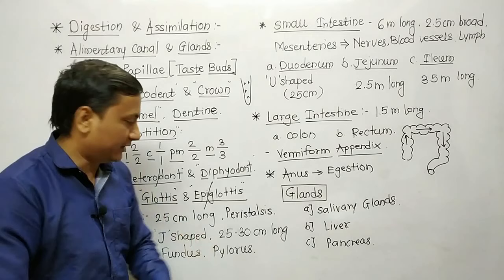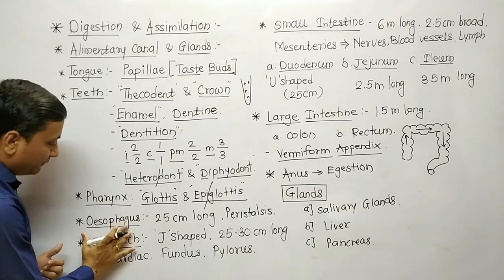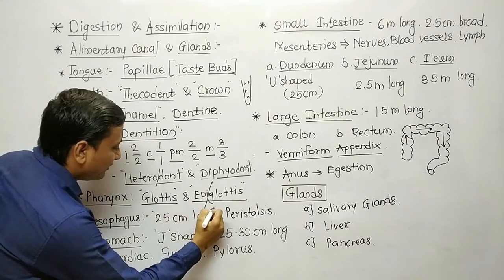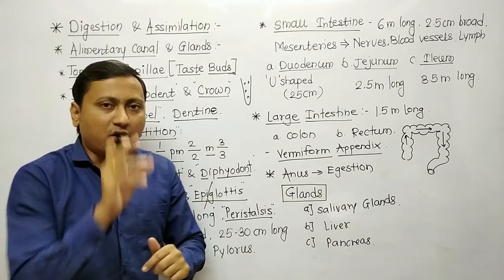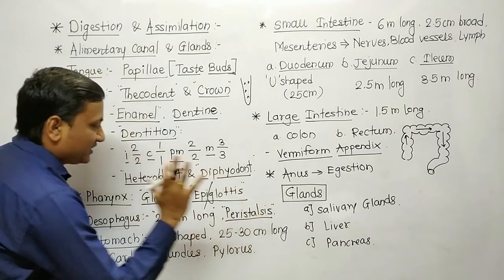The next point is esophagus. Esophagus is a tube-like structure having 25 cm length. Esophagus is responsible for peristaltic activity. The rhythmic contraction and relaxation of esophagus due to the longitudinal and circular muscles is known as peristalsis. Peristalsis is a very important process that pushes the ingested food towards the stomach.